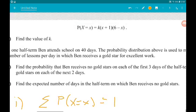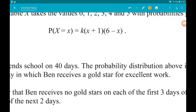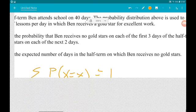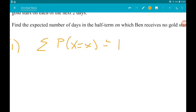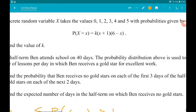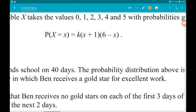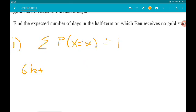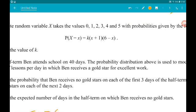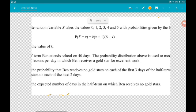So when x is 0, we get k times 2 times 5. So that's going to give us 6k. When x is 1, we get k times 2 times 5 is 10k. When x is 2, we get 3 times 4 times k which is 12k.